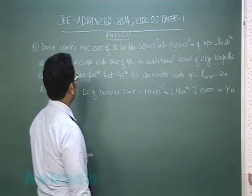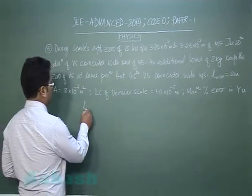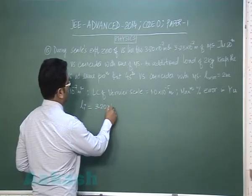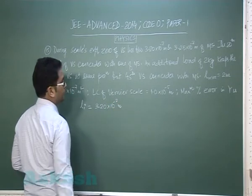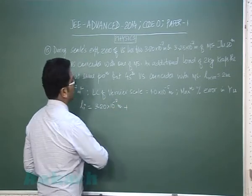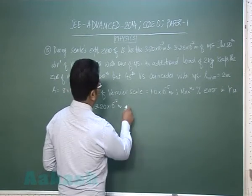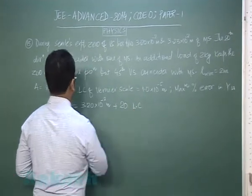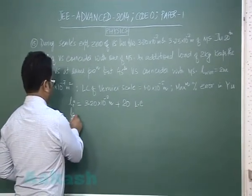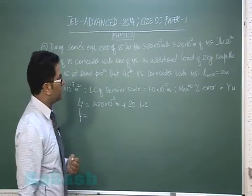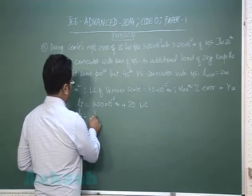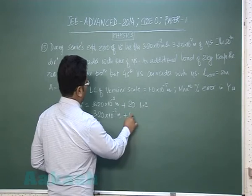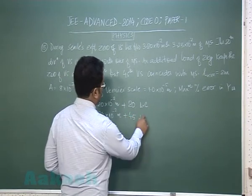Initially the length of the wire was 3.20 × 10^-2 meter plus 20 least counts. When additional load of 2 kg was applied, the zero of vernier is at the same position, but this time the 45th vernier scale coincides with the main.